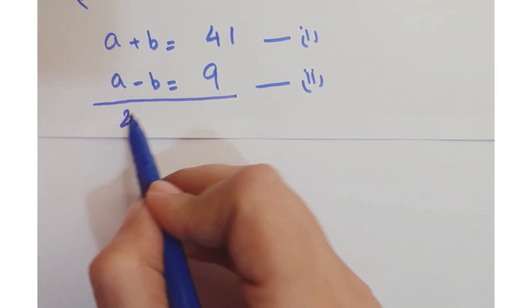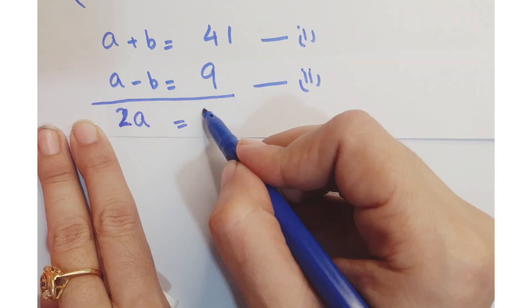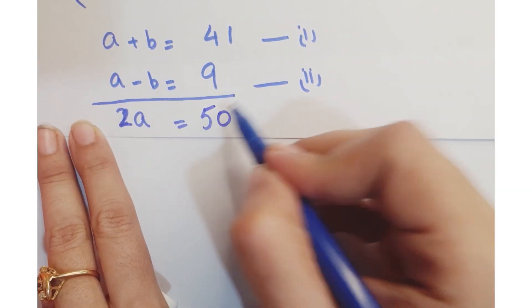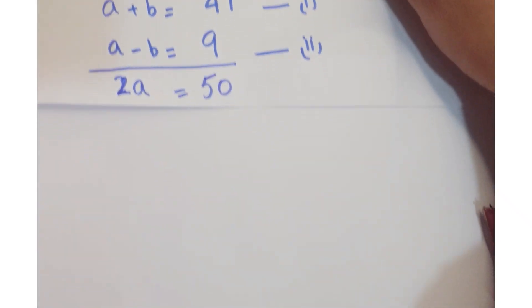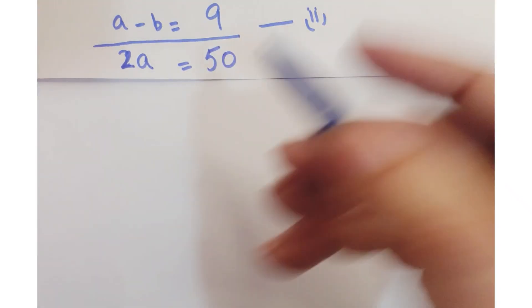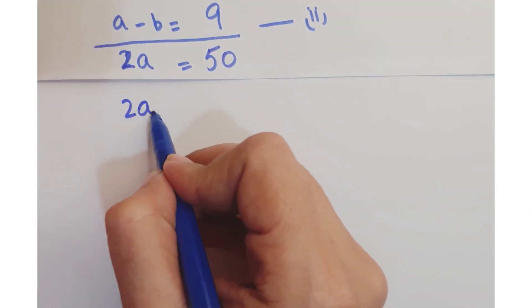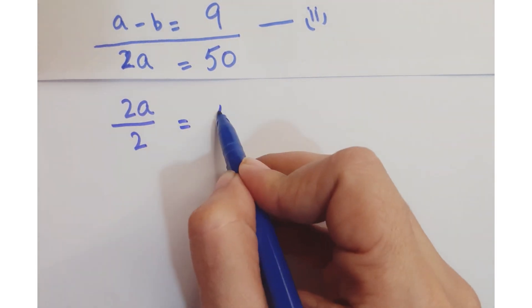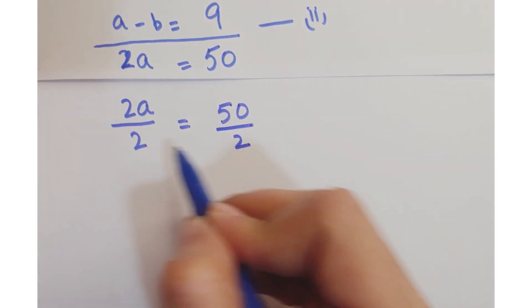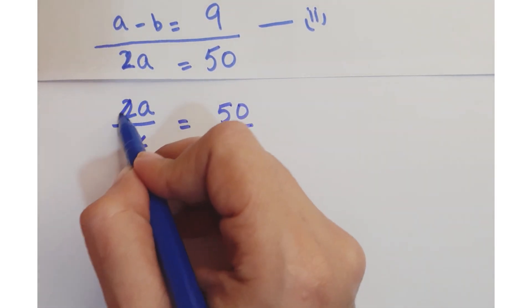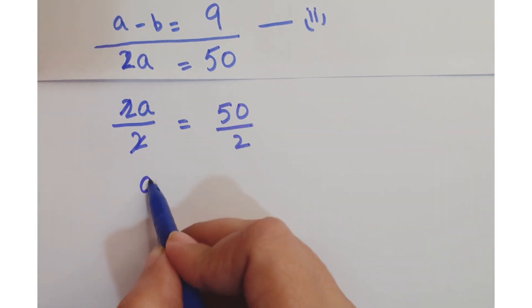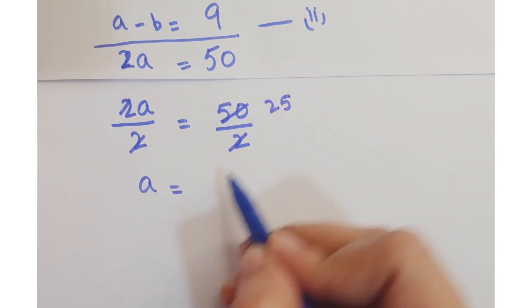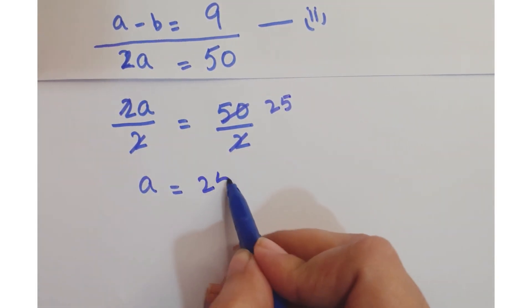So we just add them up. We get 2a equals 50. Dividing both sides by 2, the 2s cancel, so we get a equals 25.